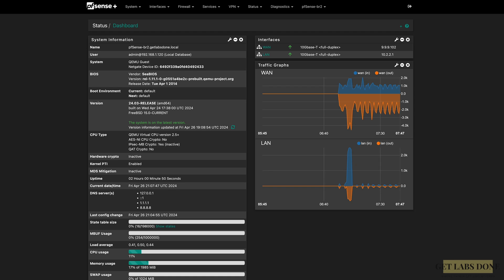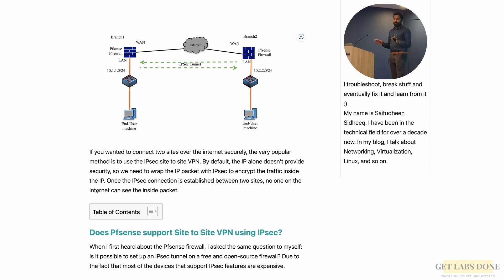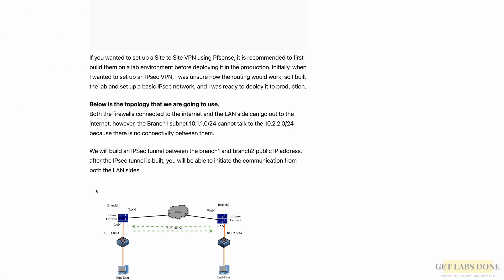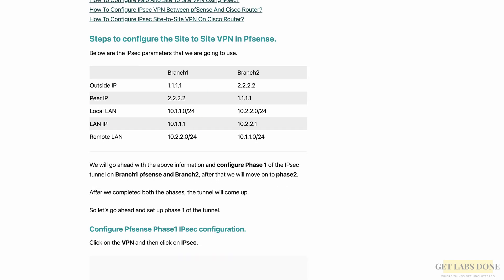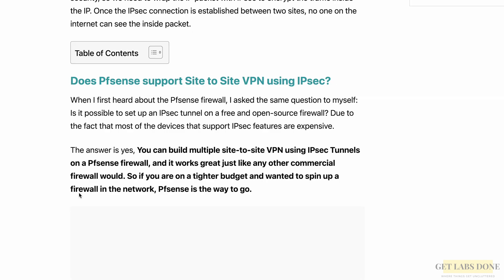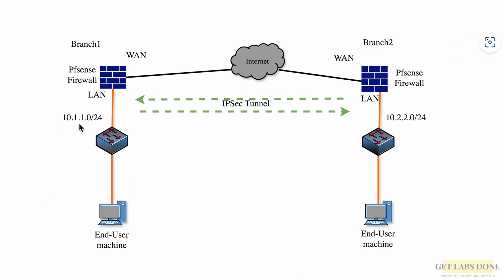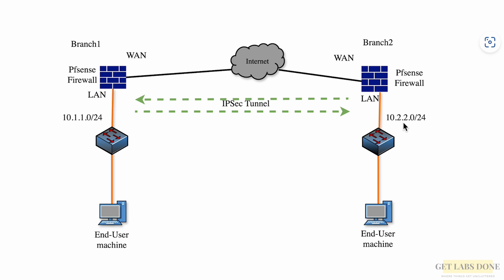Welcome to another video. In this one we are going to take a look at the IPsec configuration between two pfSense firewalls. If you'd like to follow step-by-step instructions, there is a blog article linked in the description below. This is the topology: I have a pfSense firewall at Branch 1 with a subnet of 10.1.1.0/24 and another at Branch 2 with a subnet of 10.2.2.0/24.